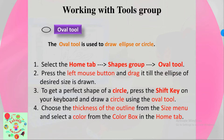The next tool is the oval tool. The oval tool is used to draw an ellipse or circle. Select the Home tab, go to the Shapes group, and find the oval tool. Press the left mouse button and drag until the ellipse of desired size is drawn. To get a perfect circle, press the Shift key on your keyboard and draw using the oval tool. Choose the thickness of the outline from the Size menu and select a color.